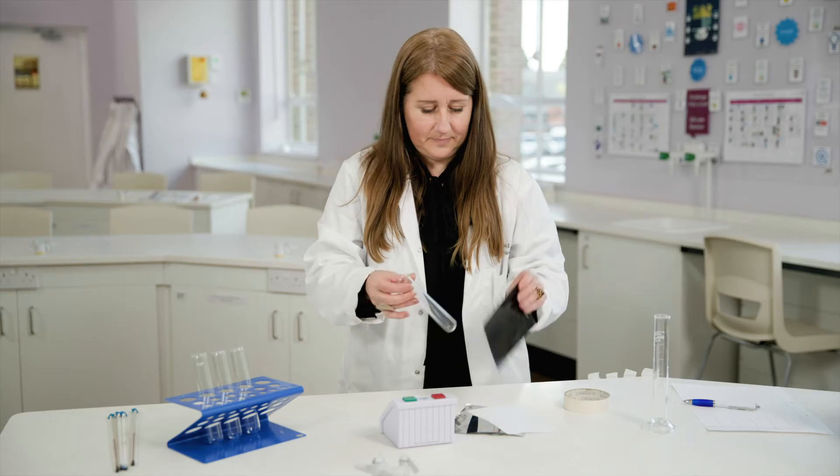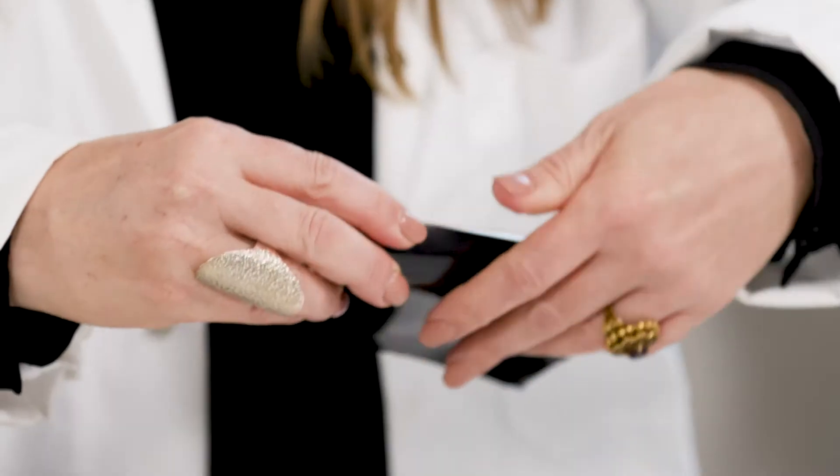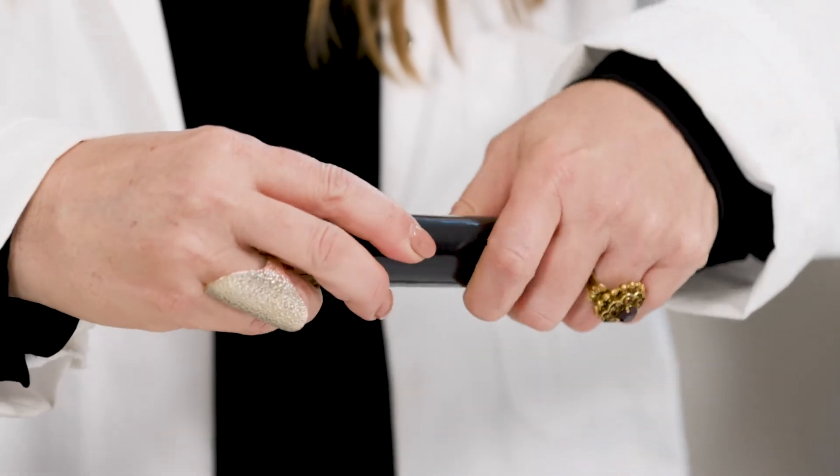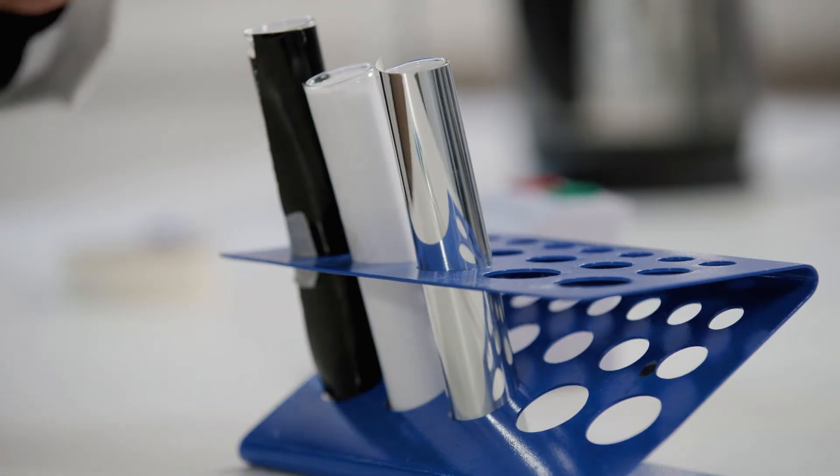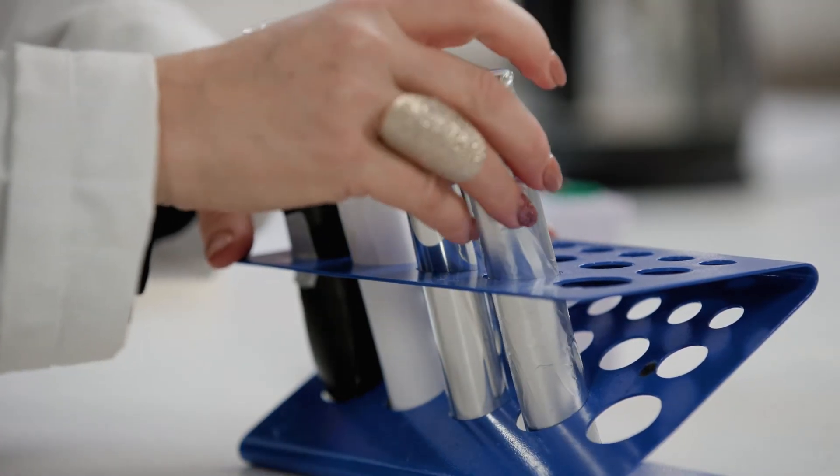First thing you will need to do is cover four boiling tubes in different coloured materials. Try to use the same thickness of material for each tube as we are trying to change one variable.